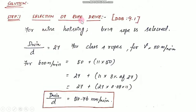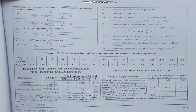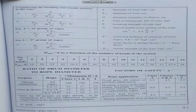Step 1 is selection of Rope Drive. We will select the rope type. The data table reference is 9.1 — drum diameter to rope diameter ratio. For mining installation and crane/hoist application, we will select rope type 6×37, 6×19. For mine hoist, we select 6×19 rope.